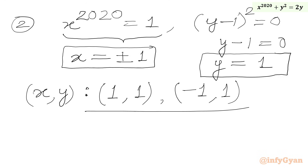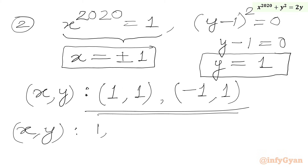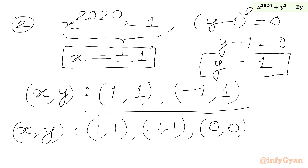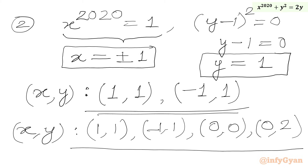So we have another two integer pairs from the second system. Writing all four ordered pairs: (1, 1), (minus 1, 1), (0, 0), and (0, 2). We have four ordered pairs in total for our equation.